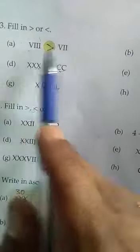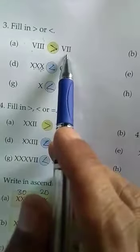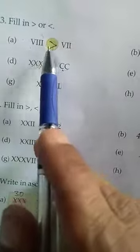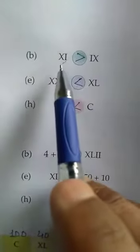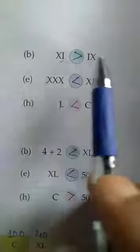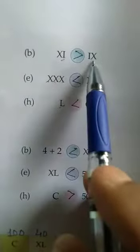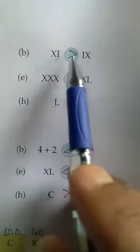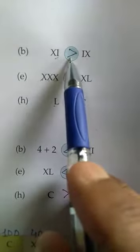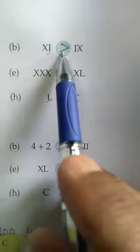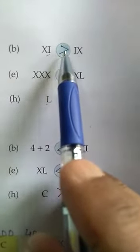This is 8 and this is 7. So 8 is greater than 7, so this sign will come here. Now QB. This is 11 and this is 9. So 11 is greater than 9, so this sign will come here. You will write this sign here.